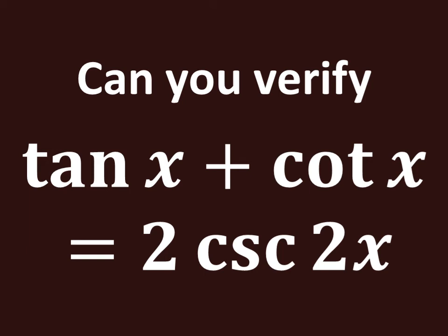In this video, we will learn to verify the given identity: tangent of x plus cotangent of x is equal to 2 times cosecant of 2 times x.